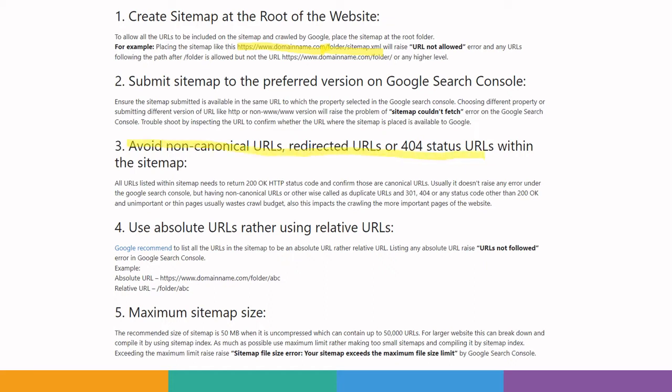Number three — avoid non-canonical URLs, redirected URLs, or 404 status URLs within the sitemap. This also includes unimportant or thin pages listed in the sitemap. Usually you won't get explicit errors for having these URLs, but if you have duplicate, redirect, or 404 URLs in your sitemap you are wasting your crawl budget and giving the search engine crawler less importance to the more important pages. Use clean URLs with a 200 OK HTTP status code within the sitemap.